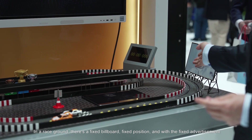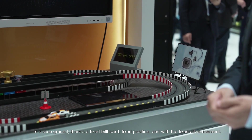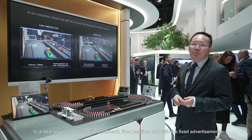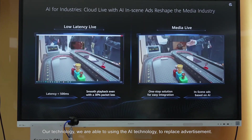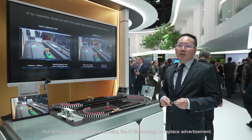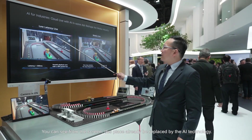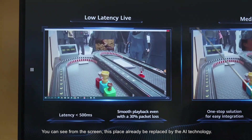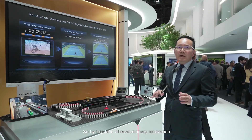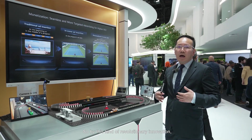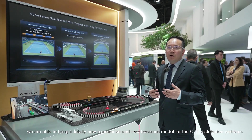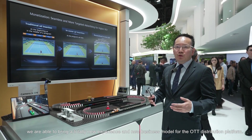In a restaurant, there's a fixed billboard at a fixed position with a fixed advertisement. Our technology uses AI to replace that advertisement. You can see from the screen that this place has already been replaced by AI technology. By this kind of revolutionary innovation, we are able to bring a totally new experience and new business model for the OTT distribution platform.